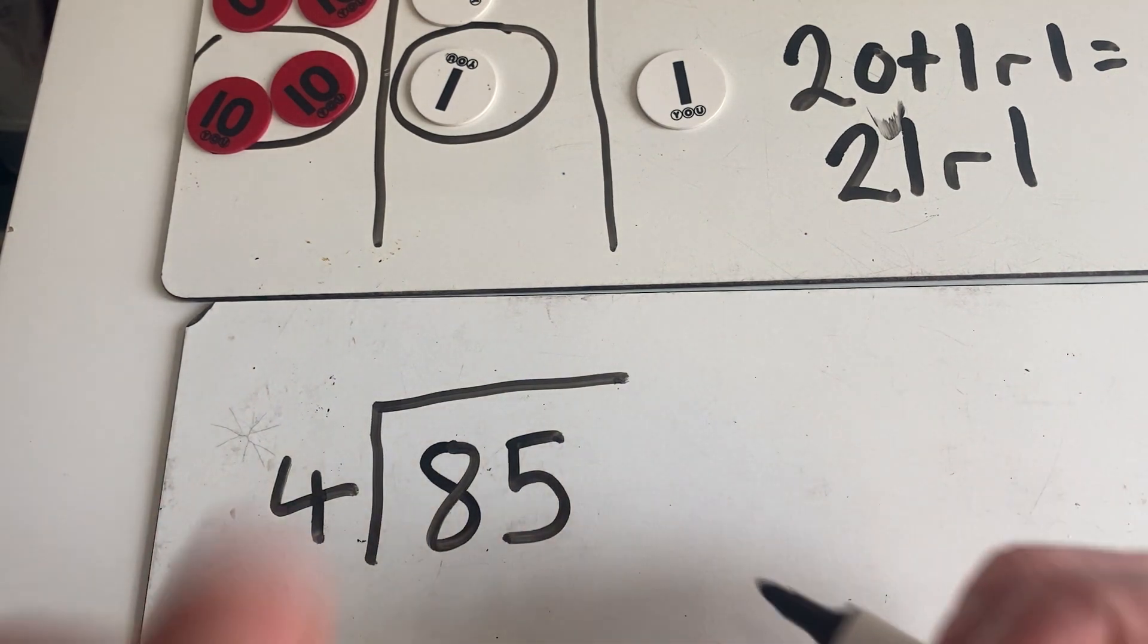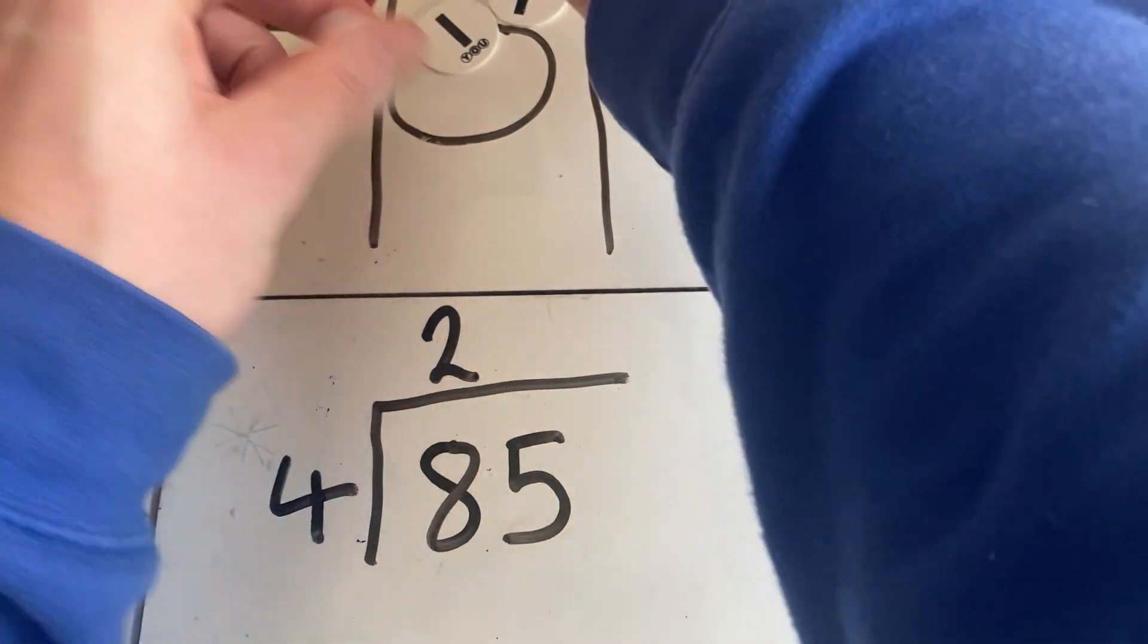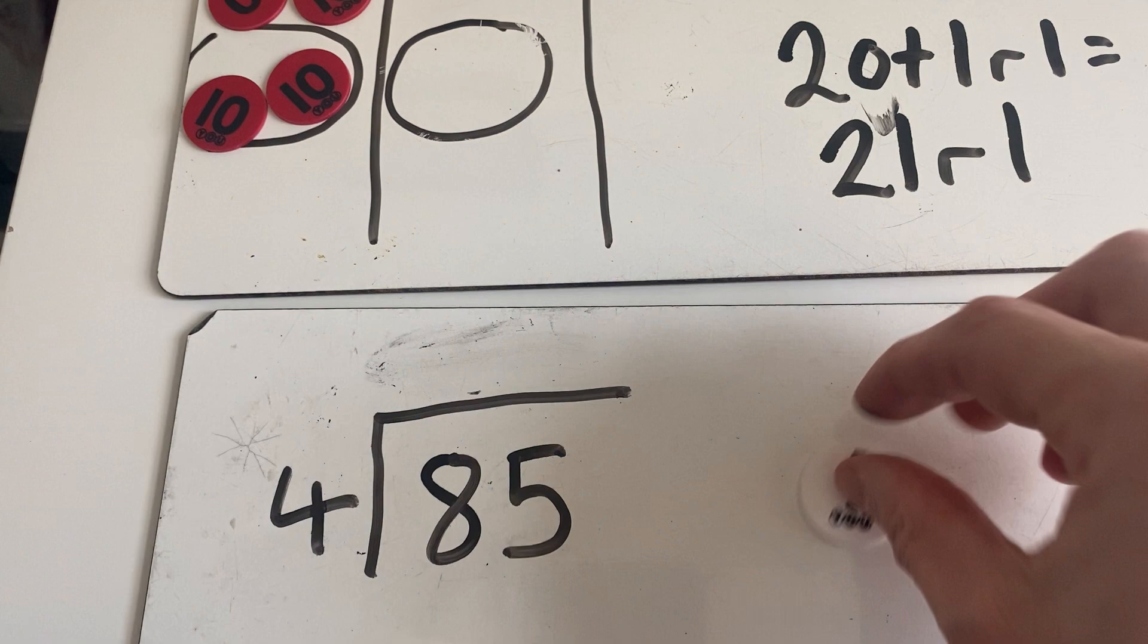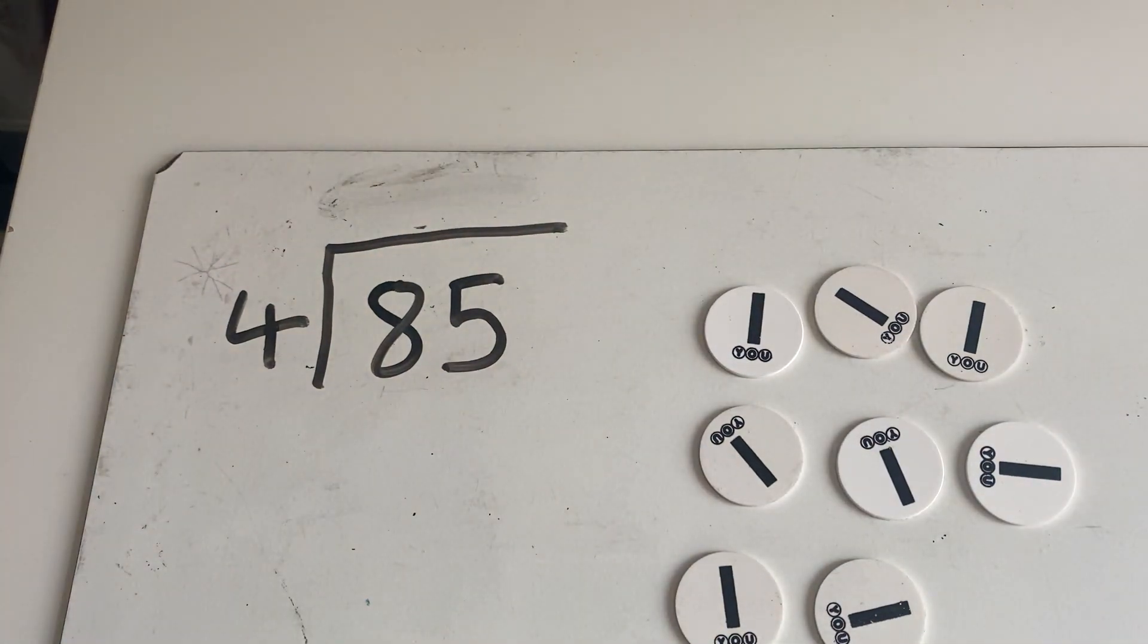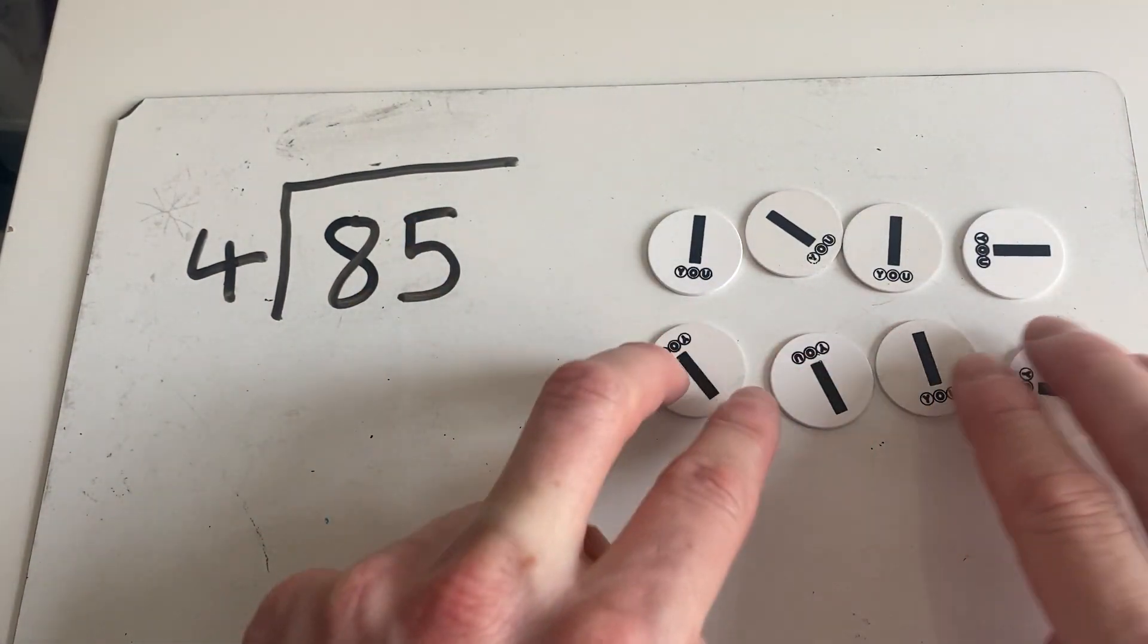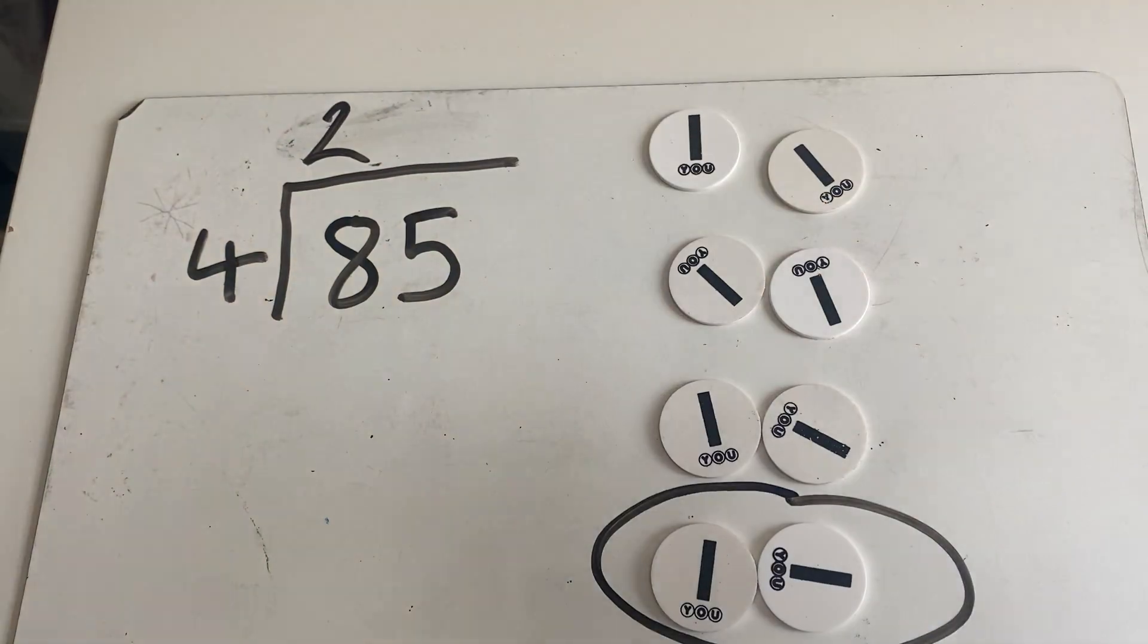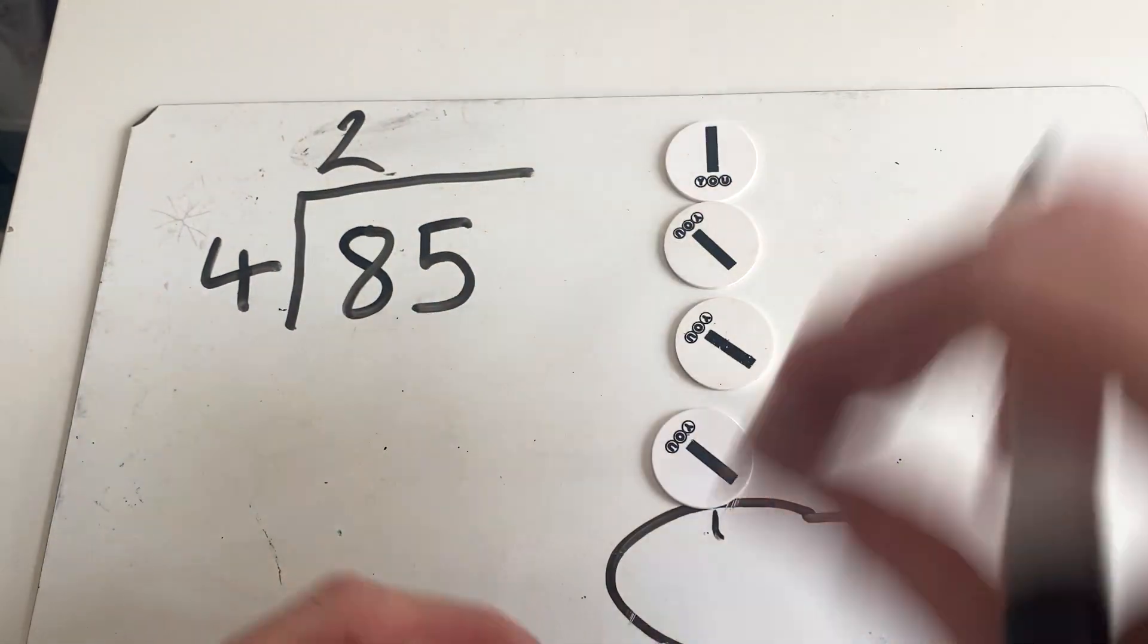So how many fours go into eight? Two. How many fours go into five? Now we can use our place value counters for this. I have eight counters - one, two, three, four, five, six, seven, eight. I work out how many groups of four - one group, two groups, three groups, and four groups. How many do I have in each group? Two.